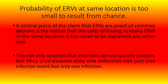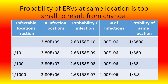A central piece of the claim is the notion that the odds of having so many ERVs in the same location is too small to be explained any other way. This not only assumes that insertions are completely random, but also assumes only one infection. If the virus can insert itself randomly anywhere in the genome of 3.8 billion nucleotides, the odds of getting an infection in the same place would be 1 in 3.8 billion. However, if you have a million infections, the odds drop to 1 in 3,800. If the virus can only insert itself in one-tenth of the locations, those odds drop to 1 in 380. For 1 in 100 locations, the odds are 1 in 38, and for 1 in 1,000 locations, the odds drop to 1 in 3.8.